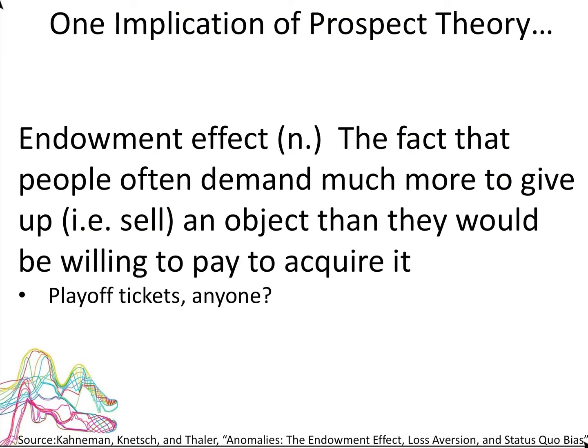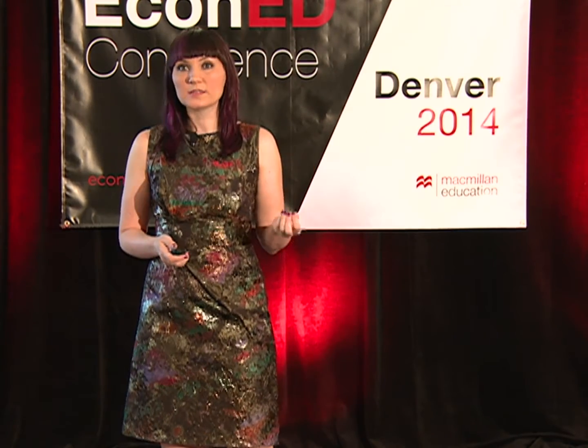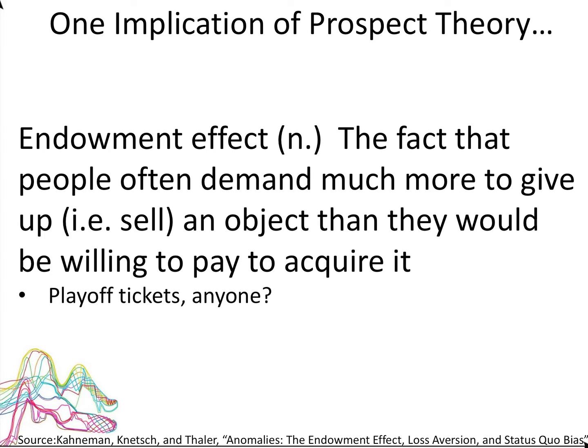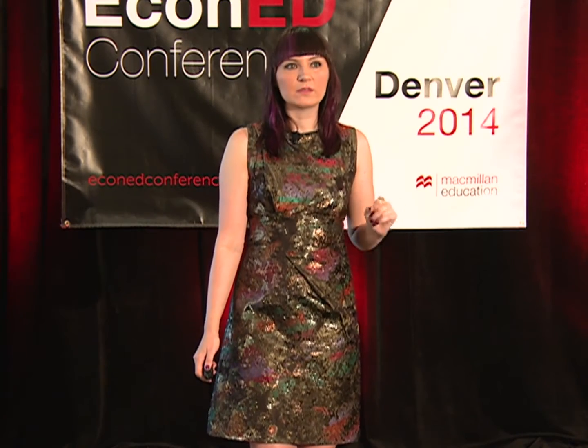That asymmetry drives a lot of the behaviors we saw in the thought experiment and that we'll see going forward. One thing that comes out of this is the endowment effect: when someone is selling something they view as their own property, they generally demand a higher price to sell that item than they would have been willing to pay to acquire it. One explanation comes back to loss aversion — if it's more painful to give something up than it is pleasant to get it, you need to be compensated more to give it up than you'd pay to get it. We need to actively think about the implications of these findings for our models so we can keep students interested and show that the basic model just needs a few tweaks rather than being thrown out.